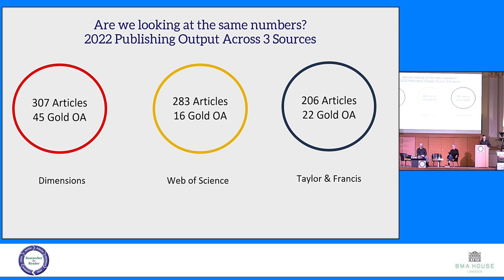This is a slide that Seth from Taylor and Francis put together. He searched for articles from one particular institution in Dimensions, Web of Science, and Taylor and Francis — all for Taylor and Francis articles published in 2022. The numbers don't match up. Interestingly, the lowest number of Taylor and Francis articles from that year is actually in Taylor and Francis itself.